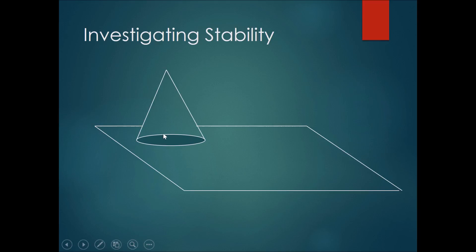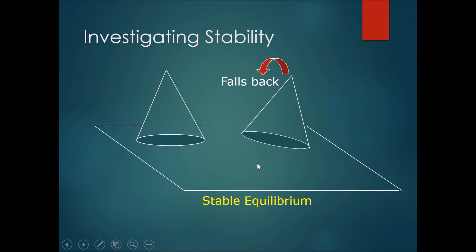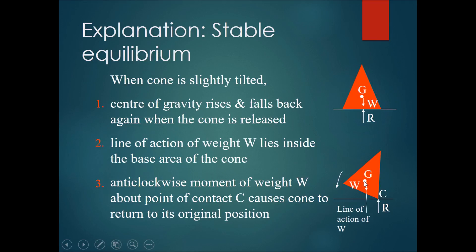Now let's consider the cone in another position where the base is directly flat on the table. What would happen if I pushed it a little bit and then released my finger? Based on common sense, the cone would fall back to its original place — this is considered a stable equilibrium. When the cone is slightly tilted, the center of gravity actually rises. This produces an anticlockwise moment, because the weight pulls down and the pivot is at the base edge. Therefore, the cone pulls itself anticlockwise and falls back into position. The anticlockwise movement of weight W causes the cone to return to its original position.